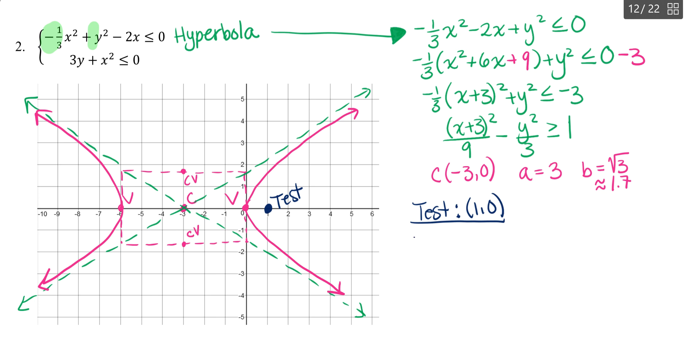And if I test that into my original inequality, so negative one third times the quantity of one squared plus zero squared minus two times one is that less than or equal to zero? Well, I'm going to get one ninth plus zero minus two. Yes, that is definitely negative. So that region works. Since that region works and that's true, then I'm going to shade here in between like the mouth of the branches. So this region here and then also the other branch because of the symmetry has the same solution. So inside that branch there. So there's the solution for the hyperbola.